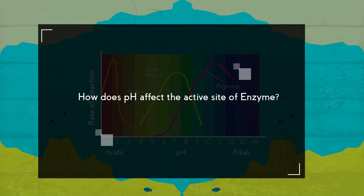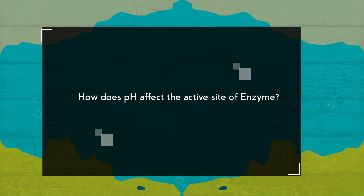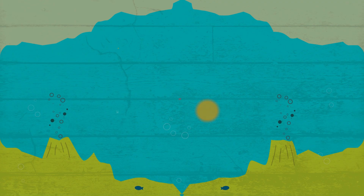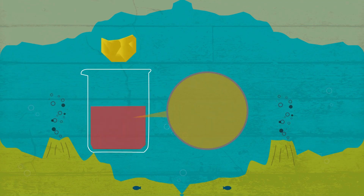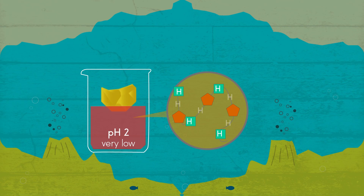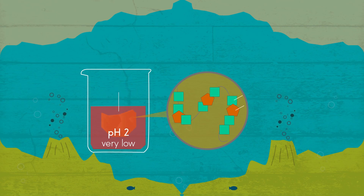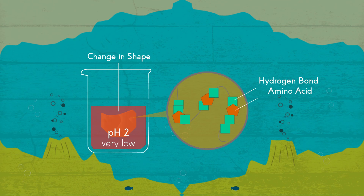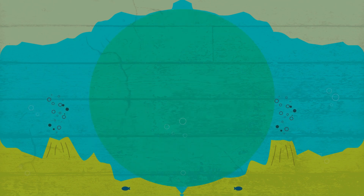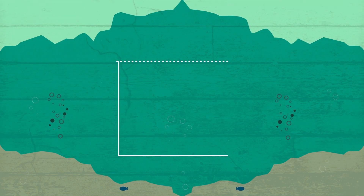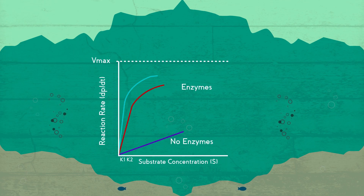How does pH affect the active site of enzymes? If the pH is too low for the enzyme, then the concentration of hydrogen ions will be greater than normal, and these will interact with amino acids, leading to a change in shape of the active site, thus reducing the rate of reaction.